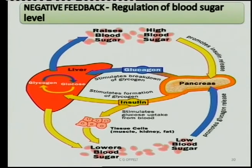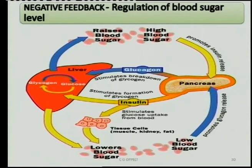If you've seen last year's Paper 2, you would have seen that this was part of it — a long essay question worth 15 marks on the negative feedback regulation of blood sugar level. So, what happens when the blood sugar level is too high? Let's take a high blood sugar level as our starting point.